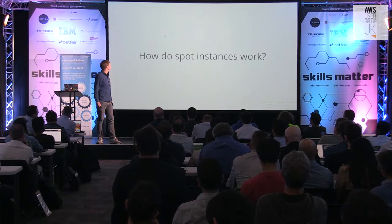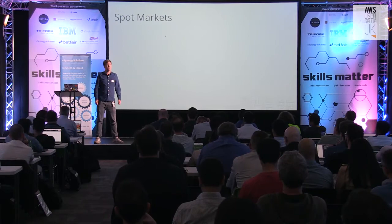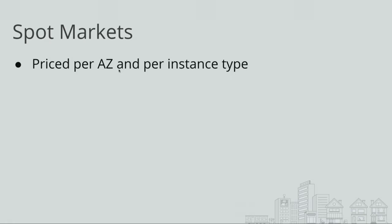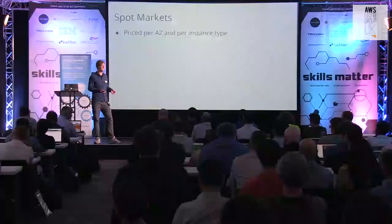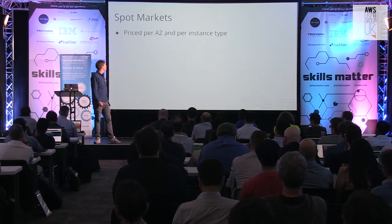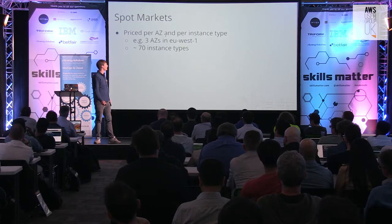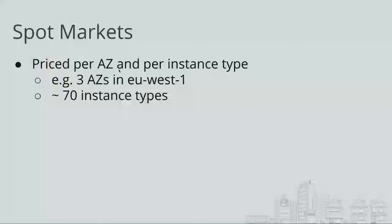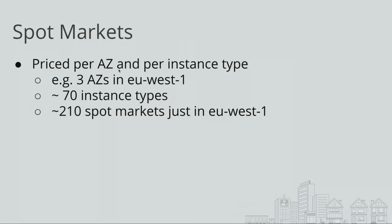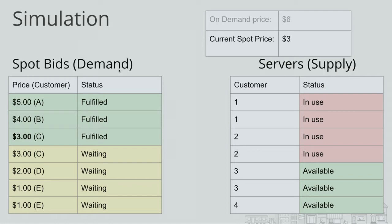I'm going to try and explain how spot instances work by talking about spot markets. The price you pay is defined in different markets — essentially per availability zone and per instance type. So Amazon has spare capacity of certain instances in each AZ. If you think about EU West 1, which has three AZs, and there are roughly 70 instance types, that's 210 spot markets — 210 different prices for Amazon instances just in EU West 1. Similar-sized regions will have something similar.